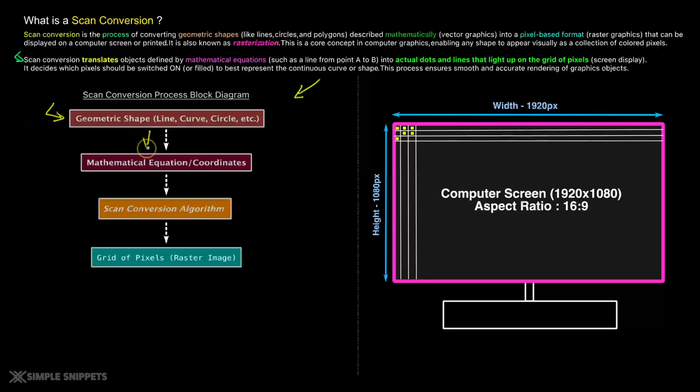So there will be some mathematical equation for that particular line. So the line will have its coordinates x1, y1 and that could be point A. And then we have x2, y2, right? That could be point B. And then there would be some equation of that line as to how the line is supposed to be drawn. The scan conversion algorithm is the third step. This is where the actual conversion algorithm comes into picture.